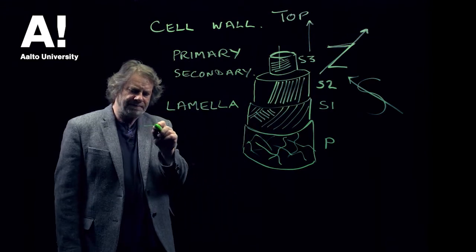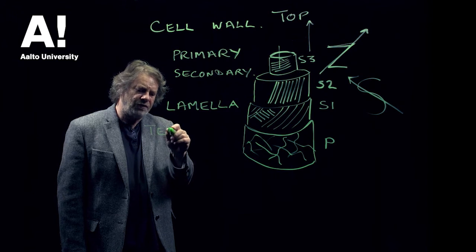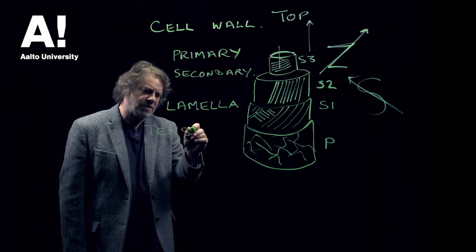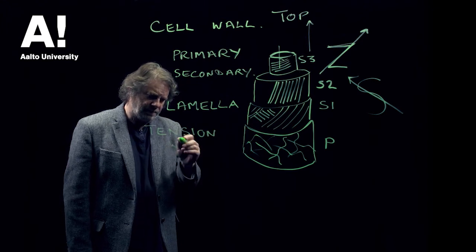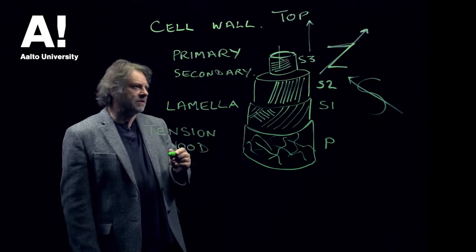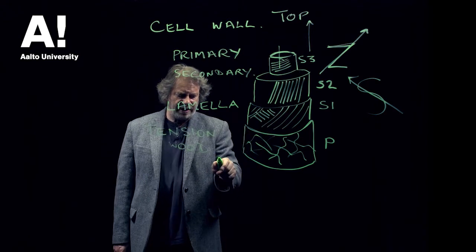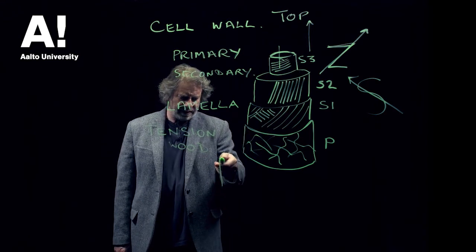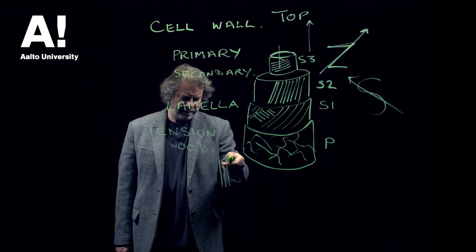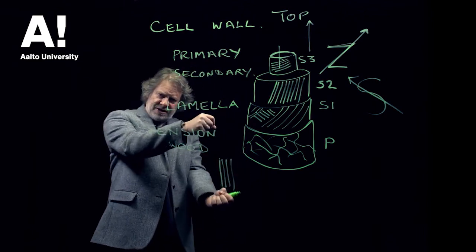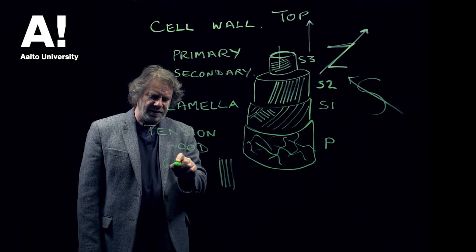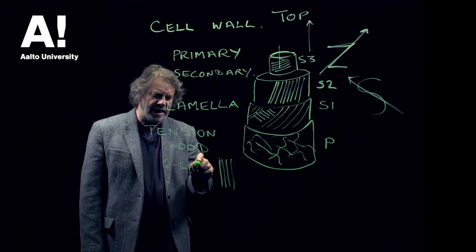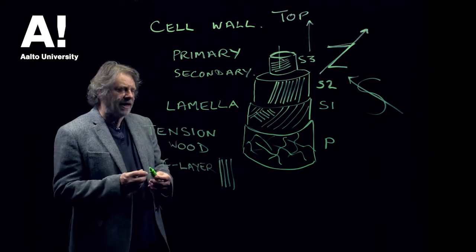You do get variations with these types of things. With tension wood, which is a wood that forms in hardwoods, that S2 layer is almost vertical. So obviously that is to take the tensile forces. And you also get something quite often in tension wood which is called a G layer, which is an extra layer, that stands for gel layer.